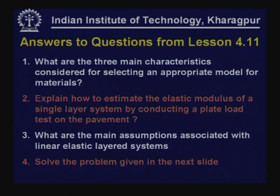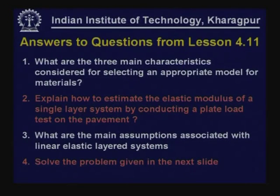Now we will have answers for the questions asked in lessons 4 and 11. What are the three main characteristics considered for selecting an appropriate model for materials? The three main characteristics are: the relationship between stress and strain (whether linear or nonlinear); the response of the material after the applied load is released (whether instantaneously elastic with complete recovery, complete recovery over time, or partly not recovered); and the time-dependent behavior of the material — accordingly it is either viscous or non-viscous, and within viscous it can be linear or nonlinear.